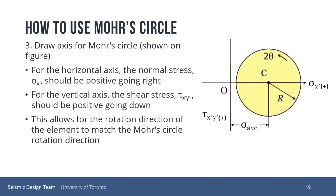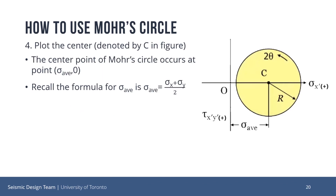Next, we draw the axes for Mohr's Circle. For the horizontal direction, the positive sigma x-prime goes in the right direction. For the vertical direction, the positive tau xy-prime goes down. This sign convention allows for the rotation direction of the element in real life to match the Mohr's Circle rotation direction. Then we must plot the center of Mohr's Circle. The center of Mohr's Circle occurs at the point (sigma average, 0), meaning shear stress is zero. The formula for sigma average is (sigma x plus sigma y) divided by 2, as stated earlier, and this is denoted by the letter c on this particular figure.